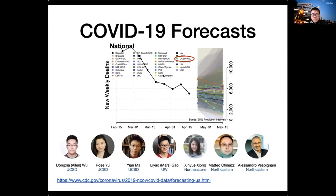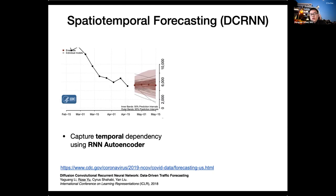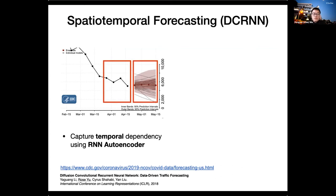I'd like to thank my advisor Rose Yu and Yama, my collaborator Leo from UW, and Xinyue and Mateo Alexandro from Northeastern University. The goal of our project is to learn a model that can make predictions in the future based on the history. To capture this temporal dependency, we use a recurrent neural network autoencoder structure. This figure shows an example of death predictions at country level. We first use a window to obtain historical observations as input, then the model generates corresponding sequences as output for predictions. We're interested in making predictions at both country and state level.